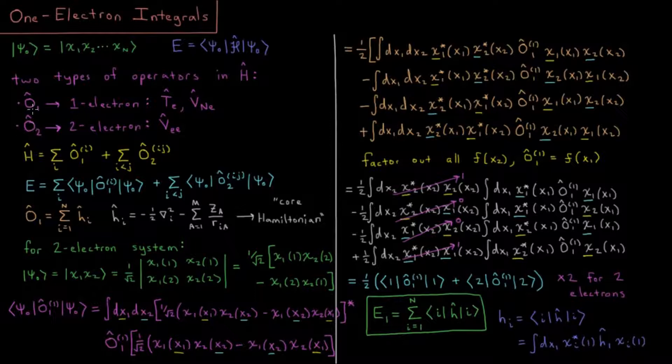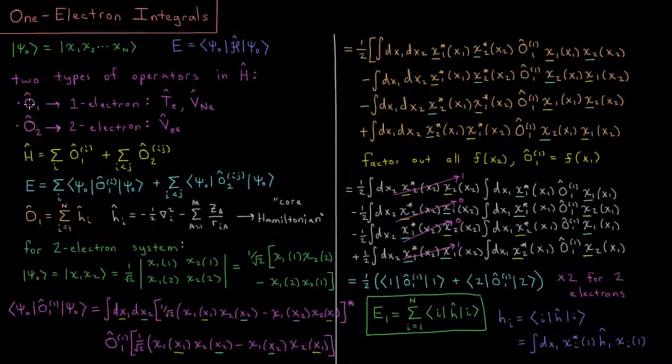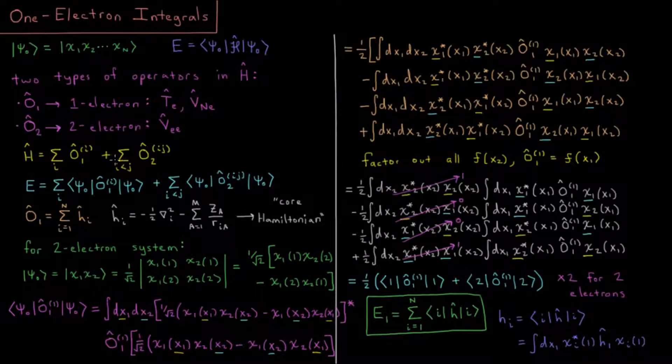Given those two types of operators, we can break down our Hamiltonian into two sums. We have our Hamiltonian is a sum of all the one-electron operators plus all of the two-electron operators.